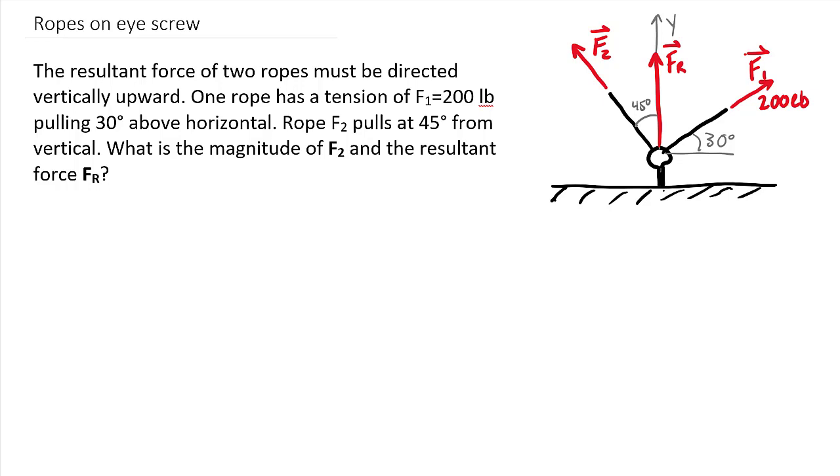One of these ropes, F1, has a 200 pound tension and is pulling 30 degrees from horizontal. The other rope has an unknown magnitude force and is pulling 45 degrees from vertical. We want to find the magnitude of F2 and also the magnitude of Fr.